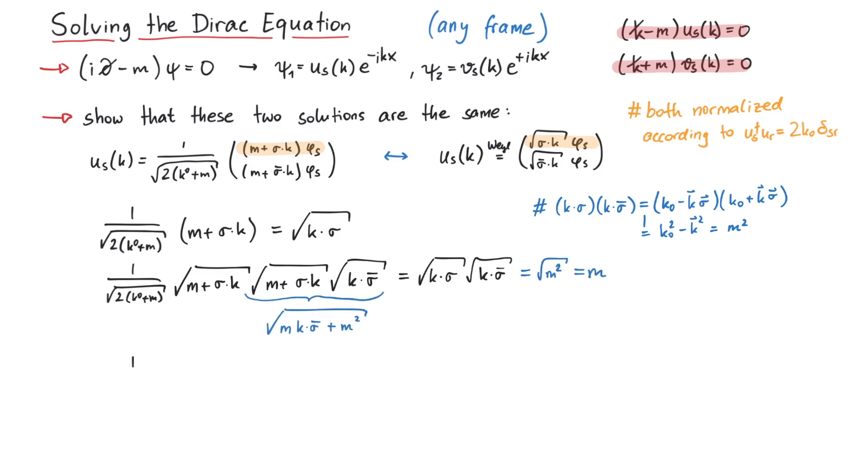Next, we can multiply the resulting square root on the left side, and again use that k times sigma multiplied with k times sigma bar is m squared. The terms cancel each other nicely, and we see that both sides are really equal. And that's pretty much it for this video. Thanks for watching.